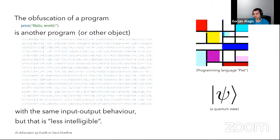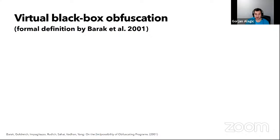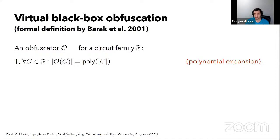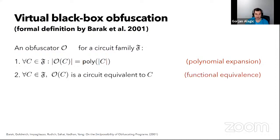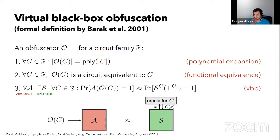This output program doesn't necessarily have to be a program itself. It could potentially be some object that you can evaluate the original function with, like a quantum state. We're interested in cryptographic strength obfuscation, which demands three properties: efficiency is preserved, functionality is preserved, and the obfuscation property, which says roughly that anything you can learn by studying the obfuscated circuit you can also learn just by plugging stuff in and seeing what comes out — so as an oracle.